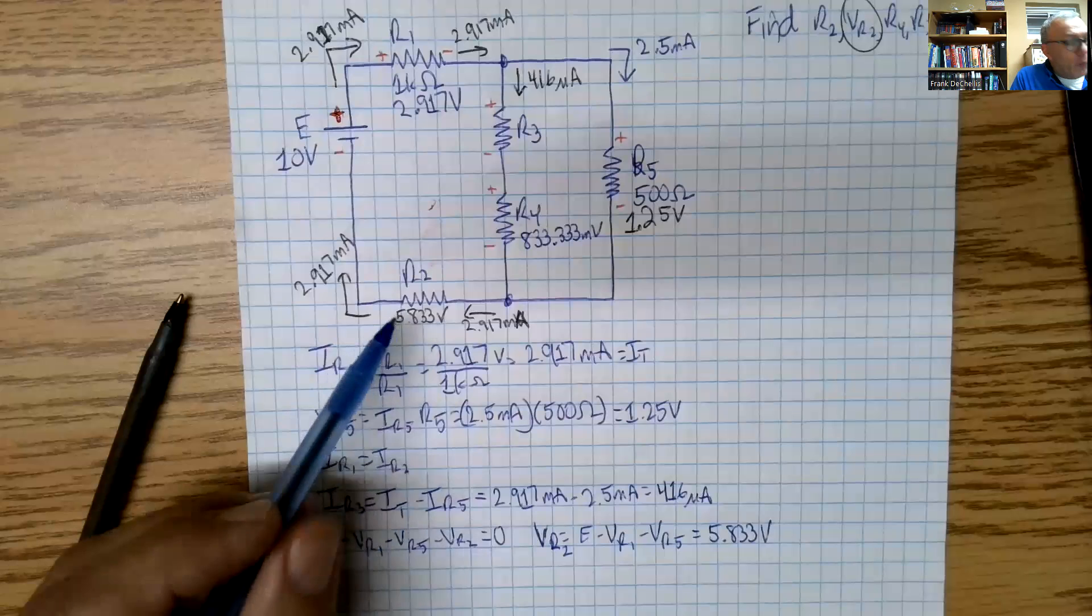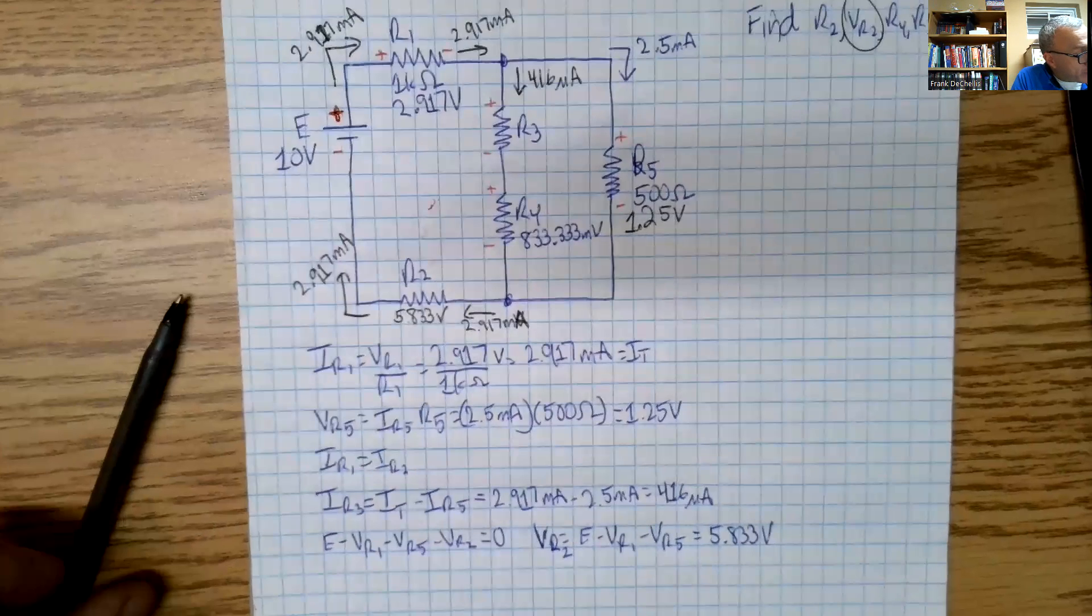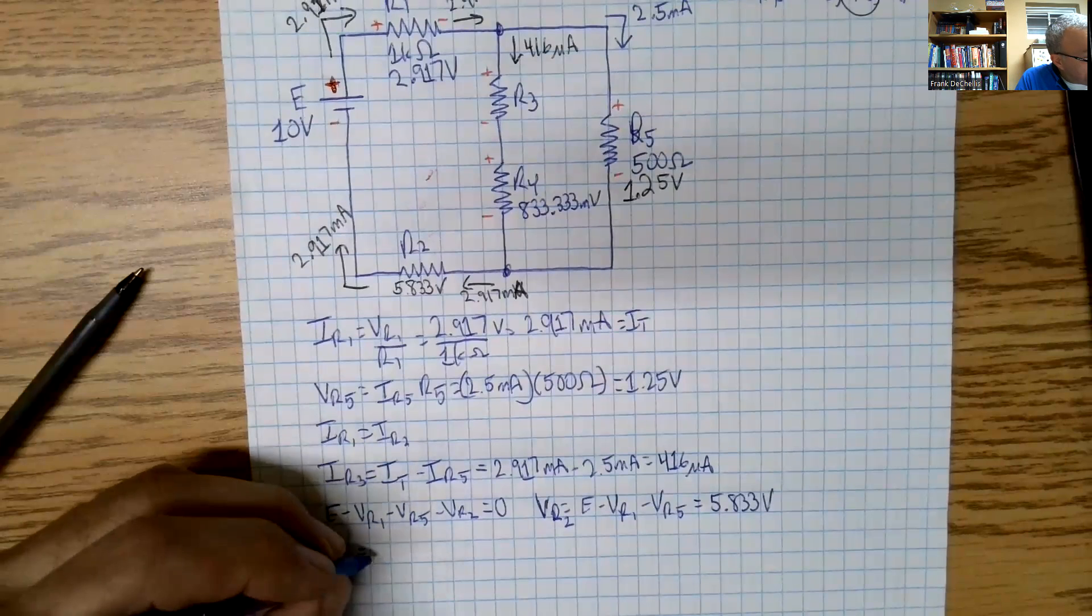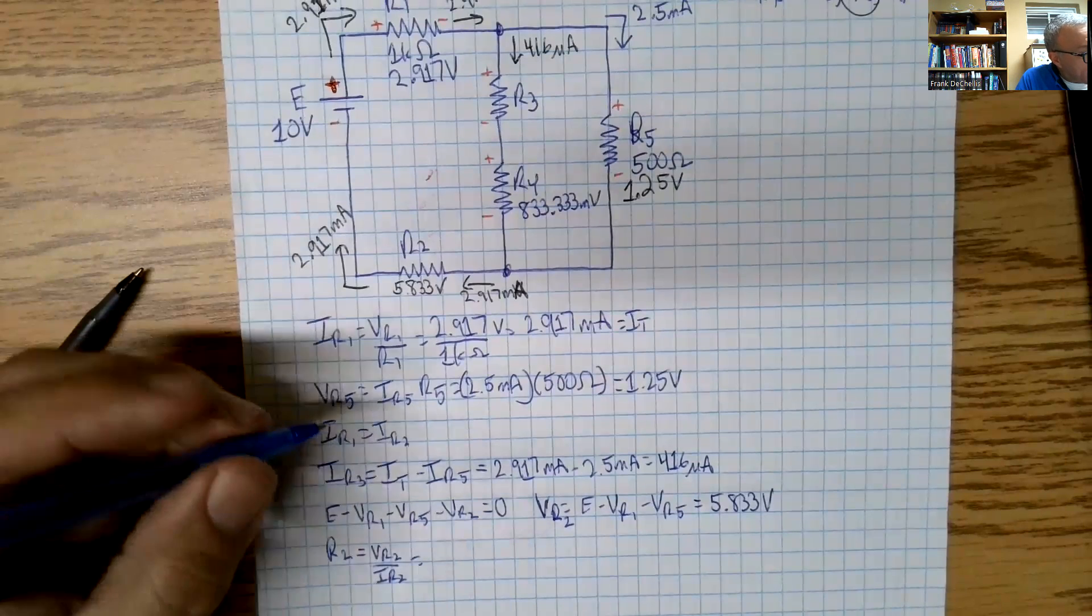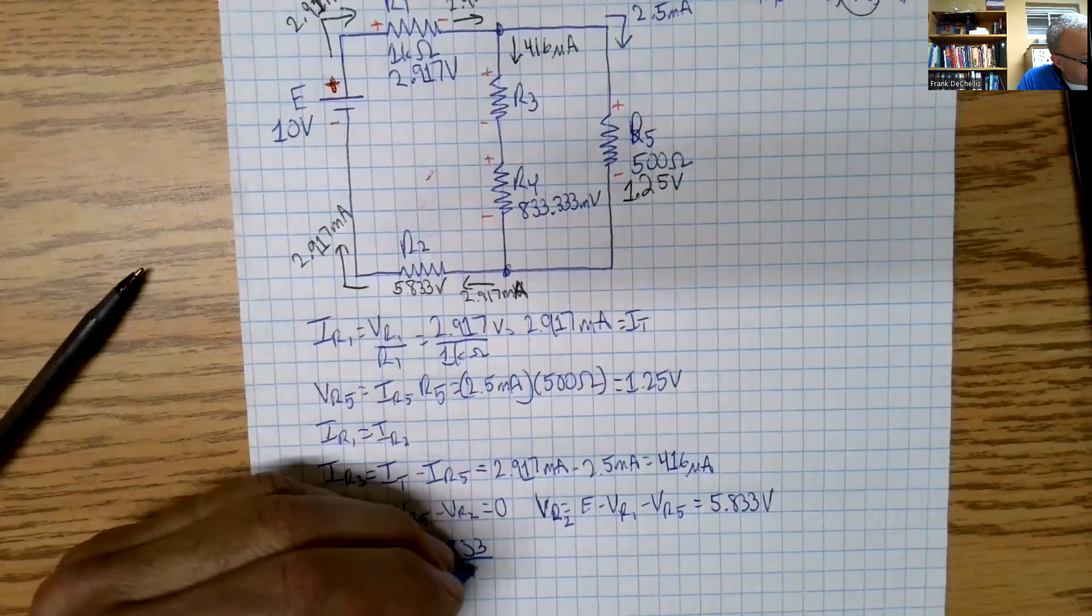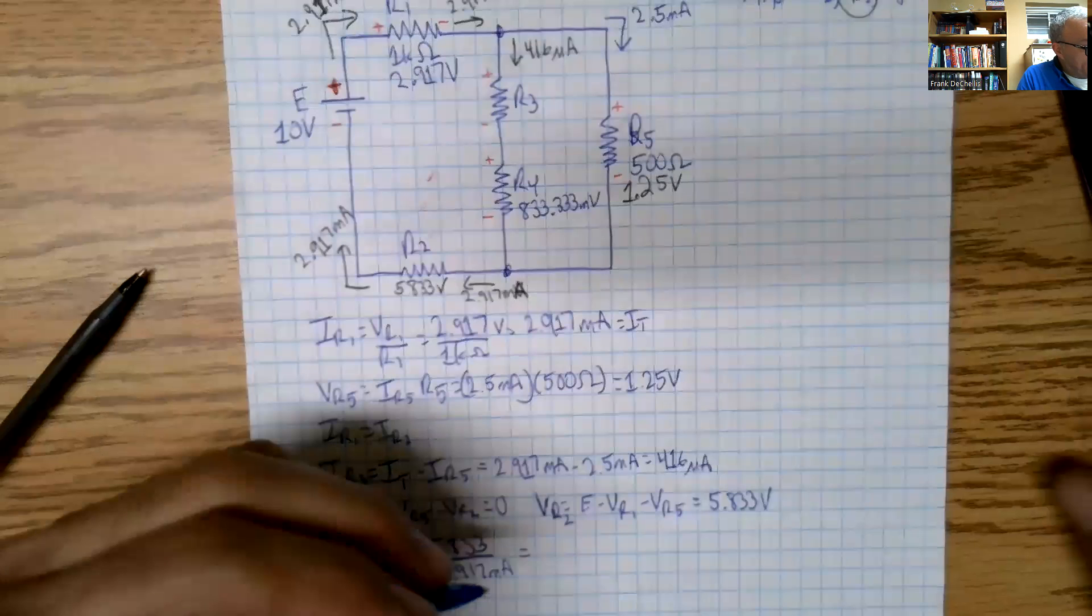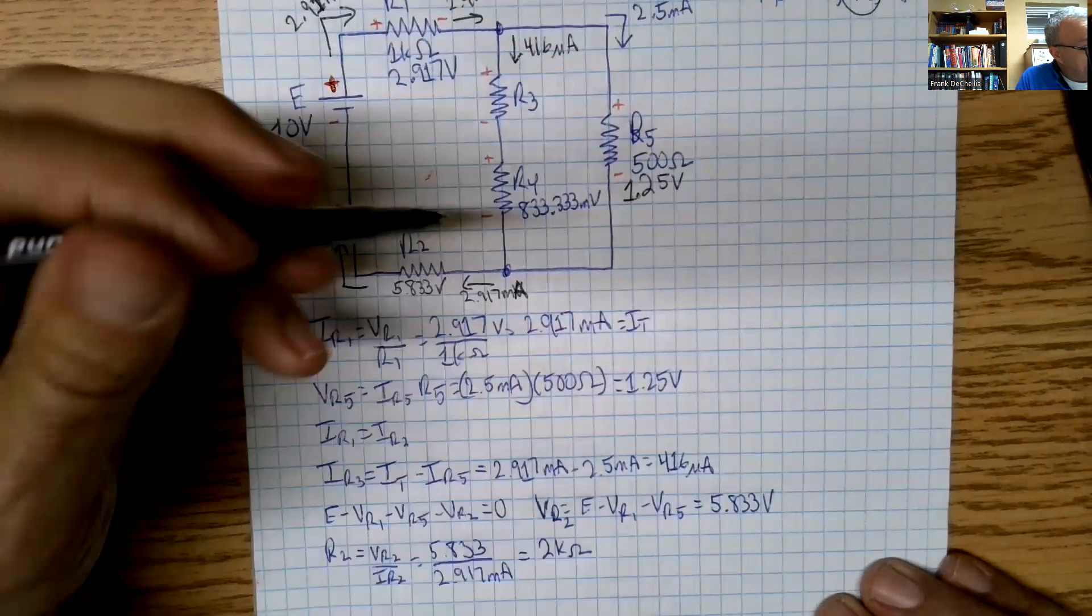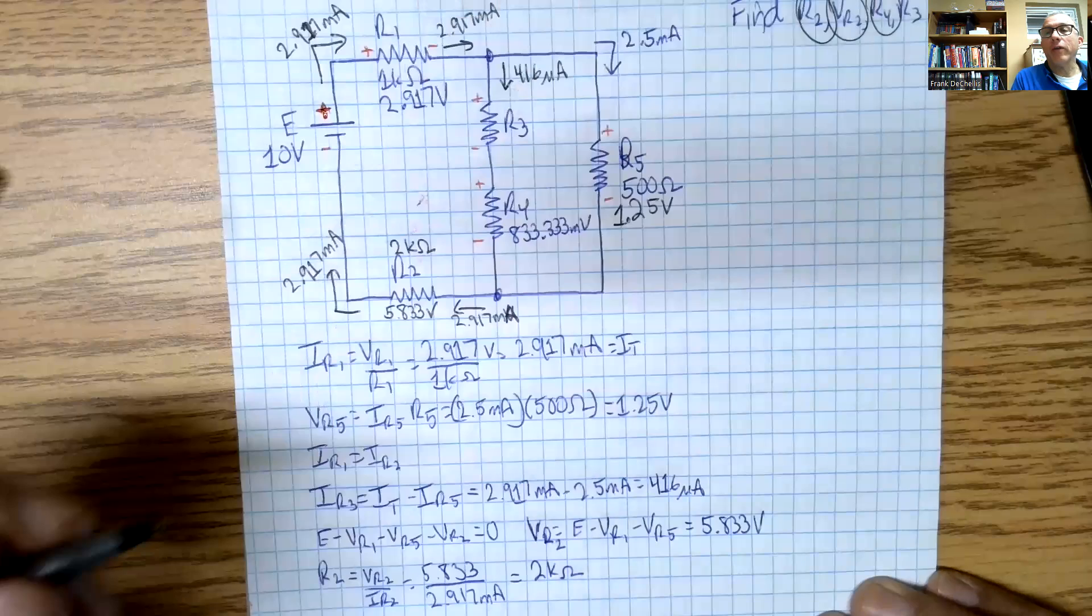Now we know the voltage across R2 and we know the current through R2, which tells us that R2, if we apply Ohm's law, R2 is equal to VR2 divided by IR2, which is 5.833 divided by 2.917 milliamps, and that's going to give us 2K. We just knocked off another one of our requirements.